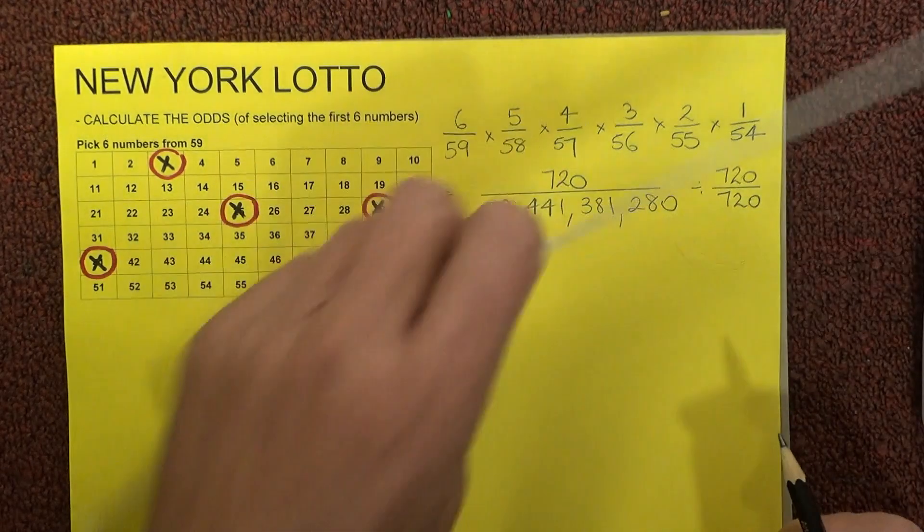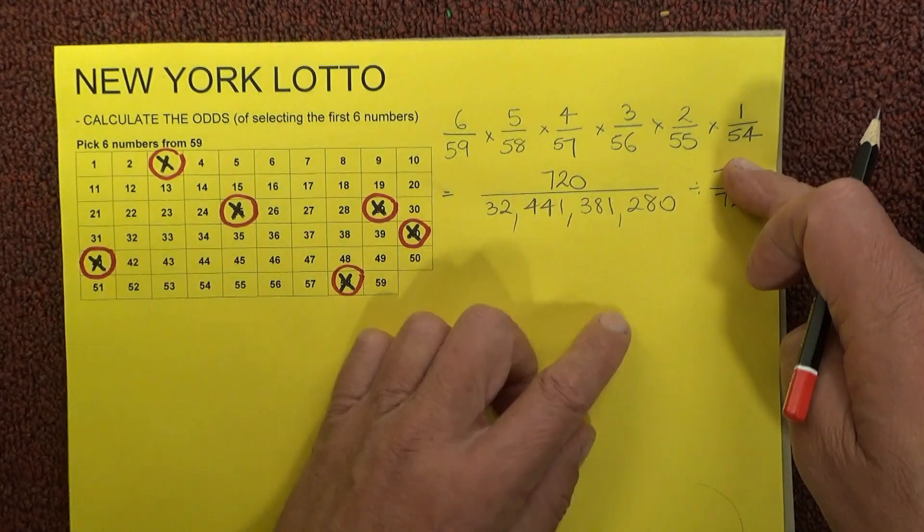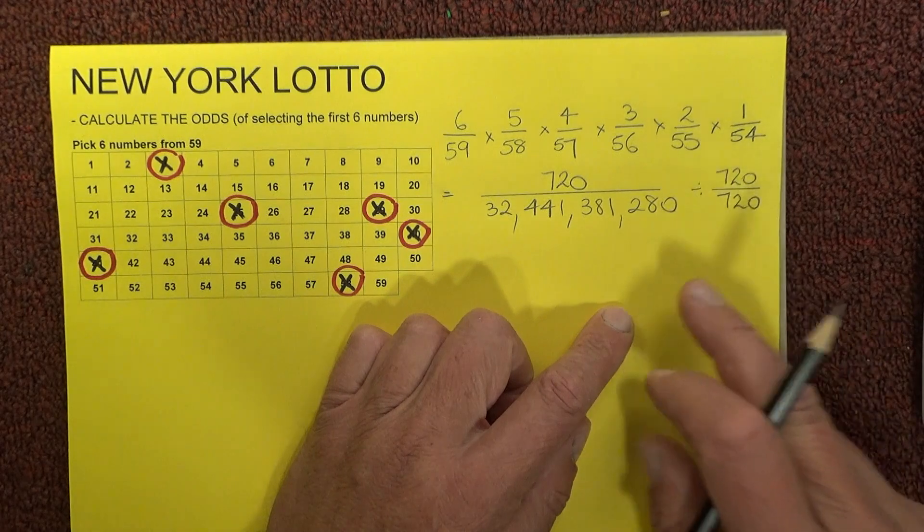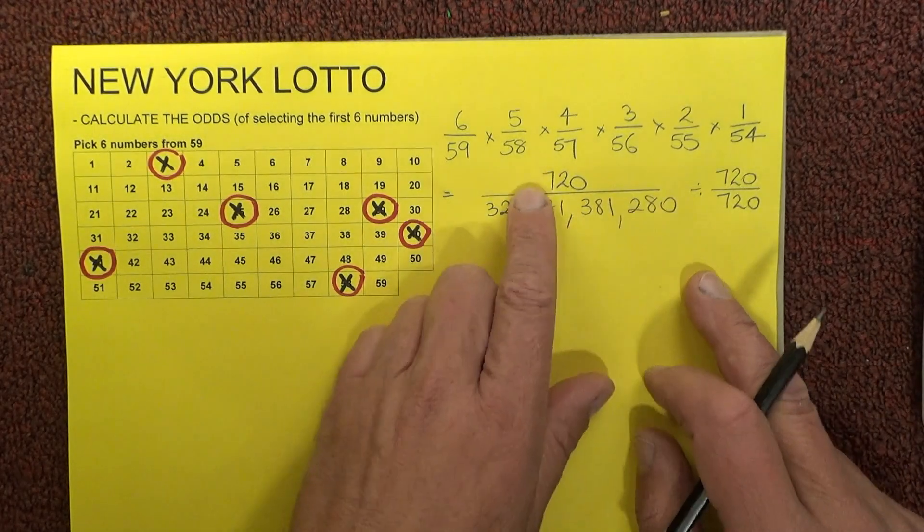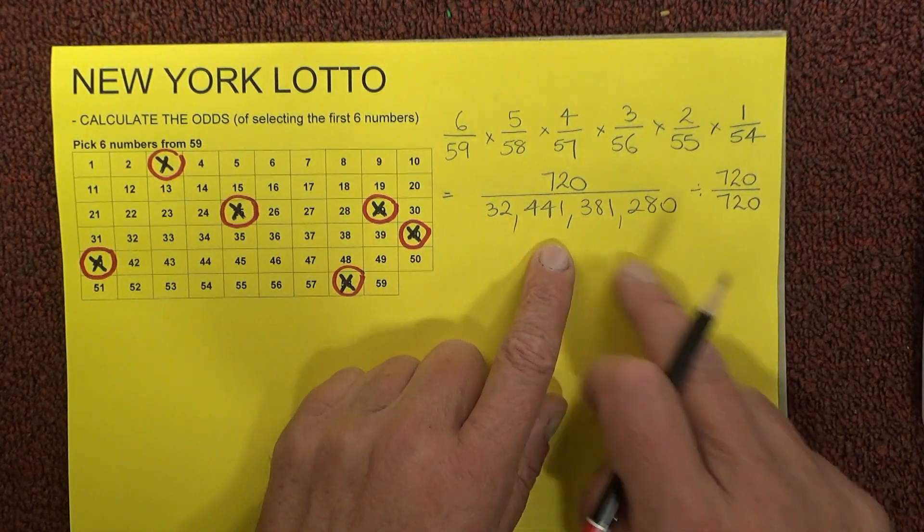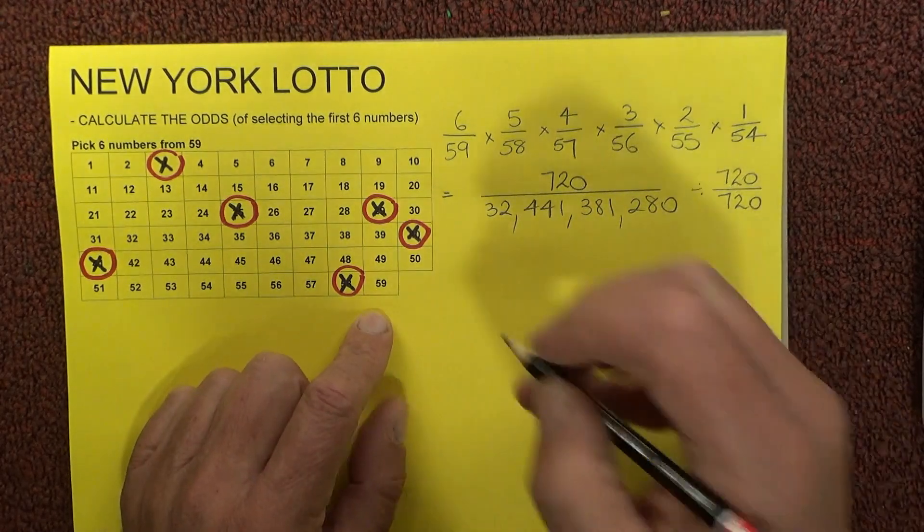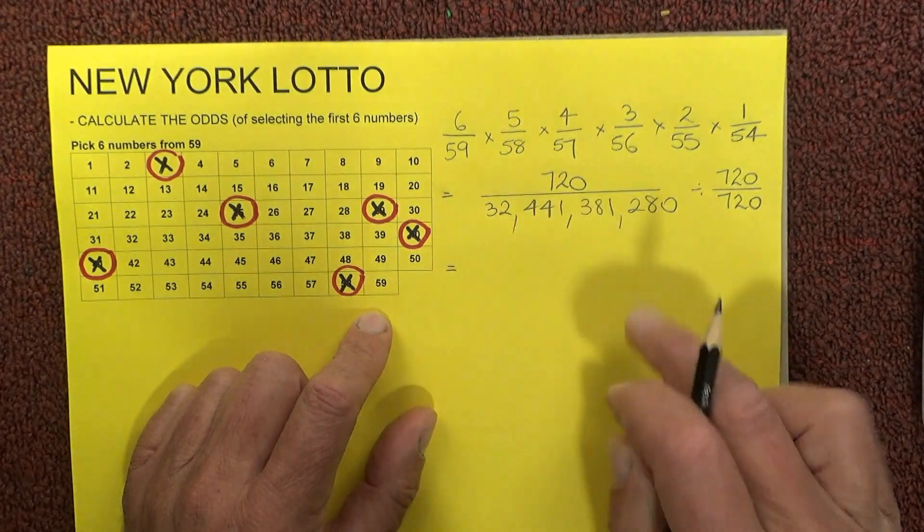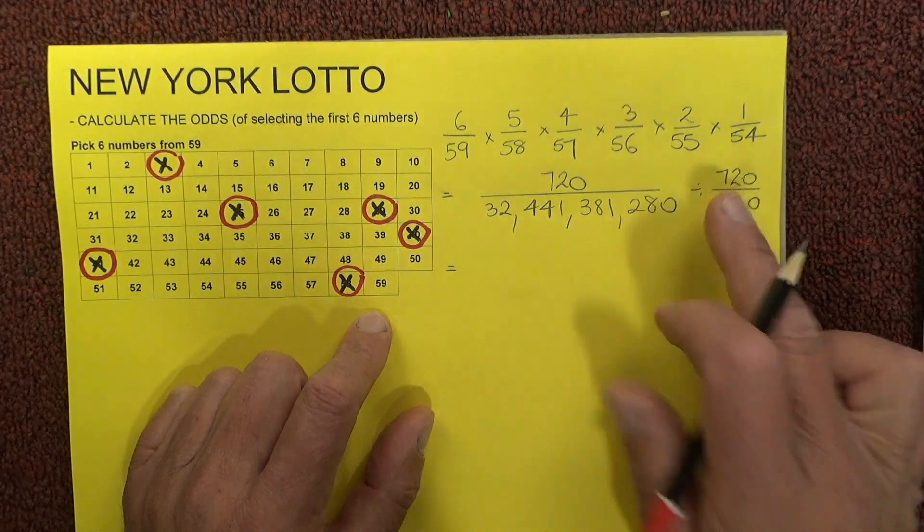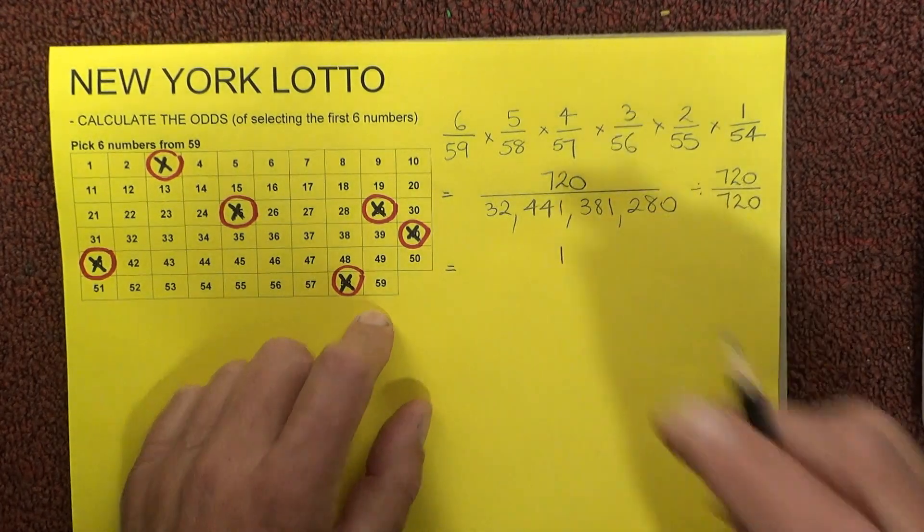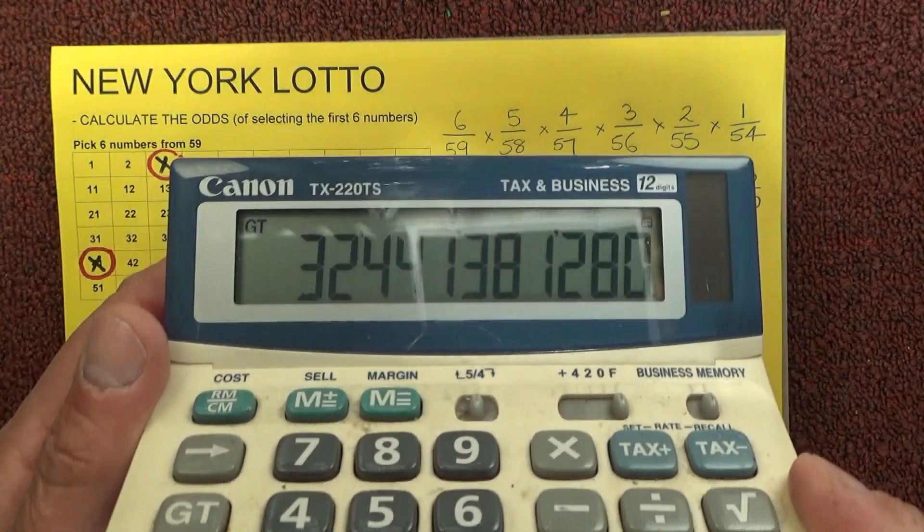If you can remember back to your high school math, 720 divided by 720 is the same as being one. So what we're doing is dividing by one, but we're creating odds that are more user-friendly. So we go 720 divided by 720, which is one.